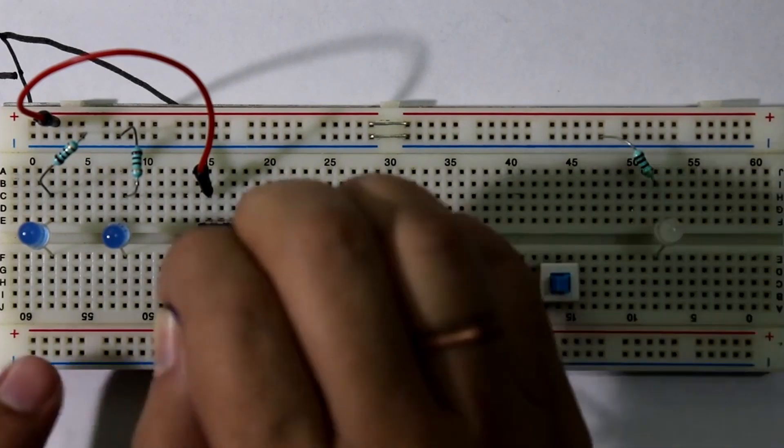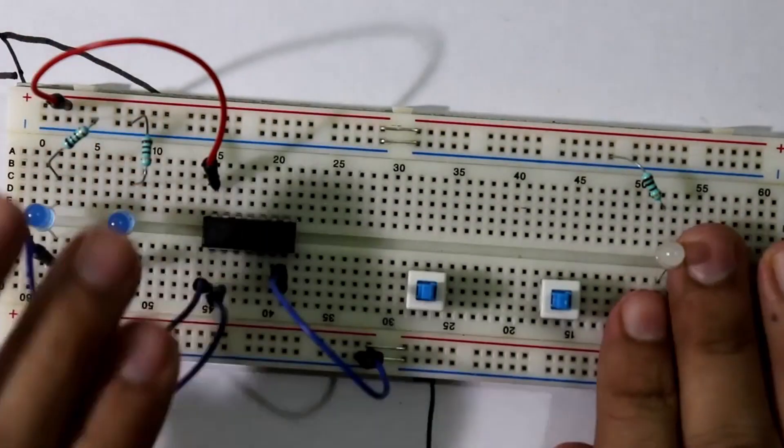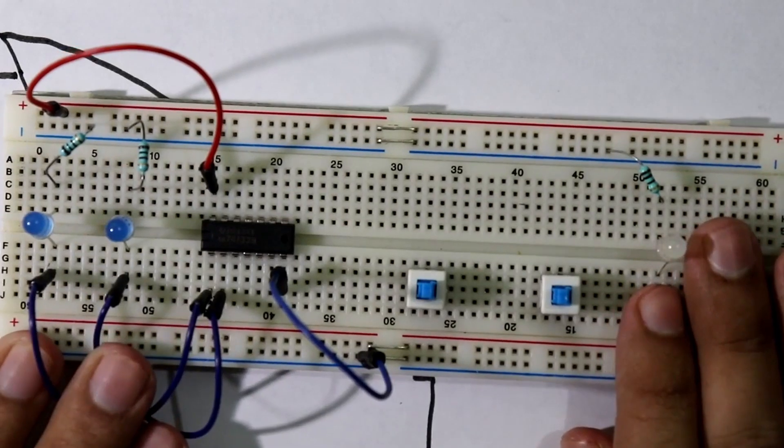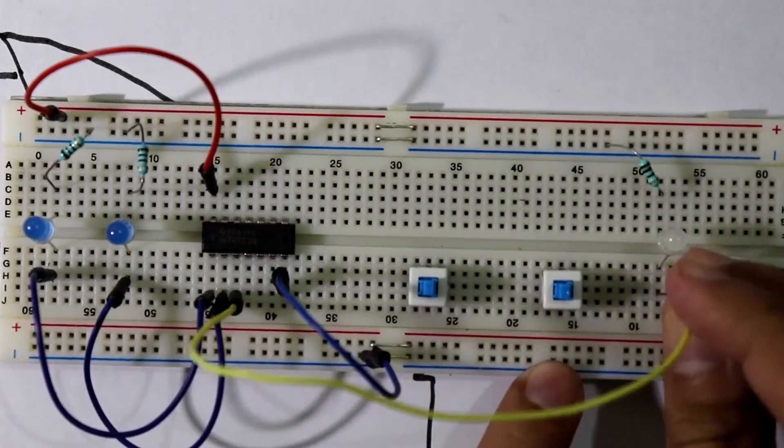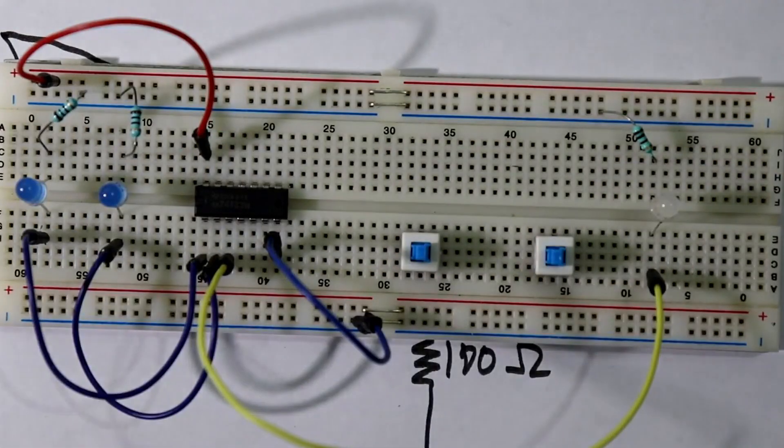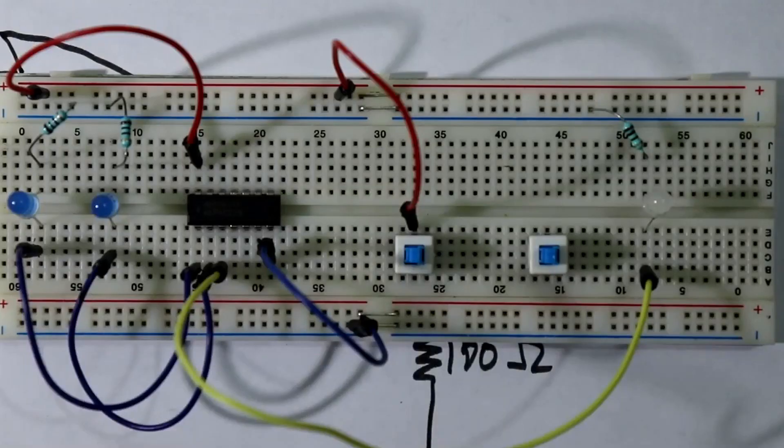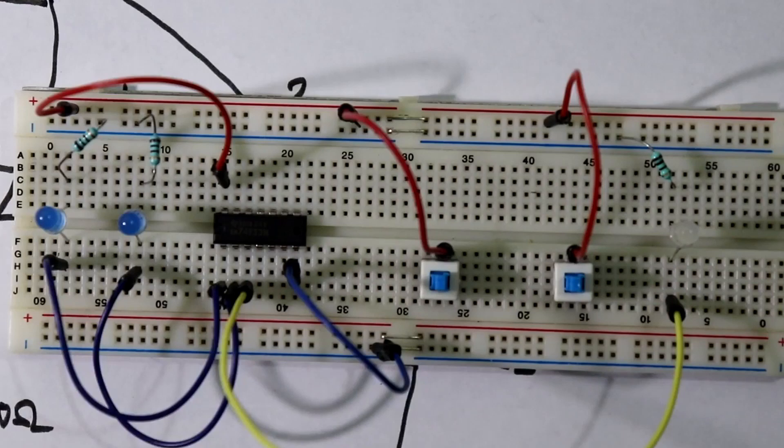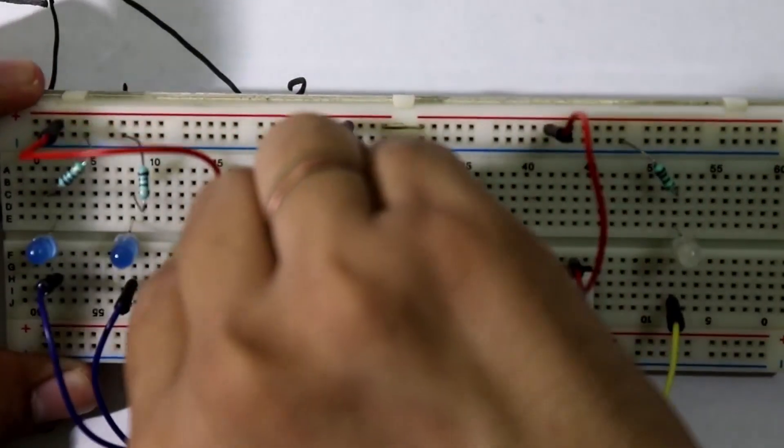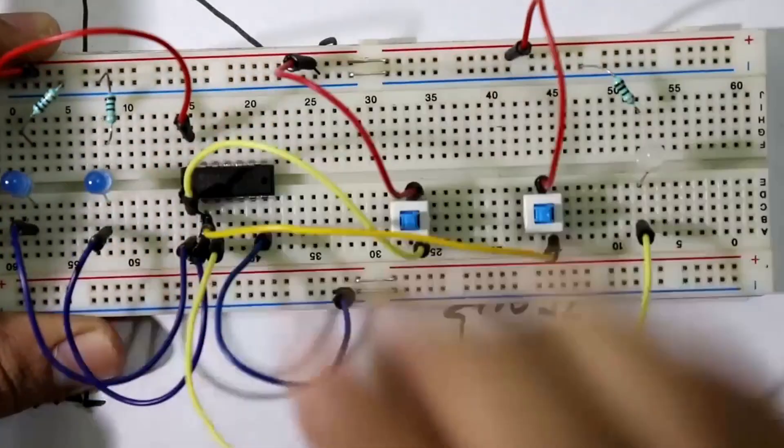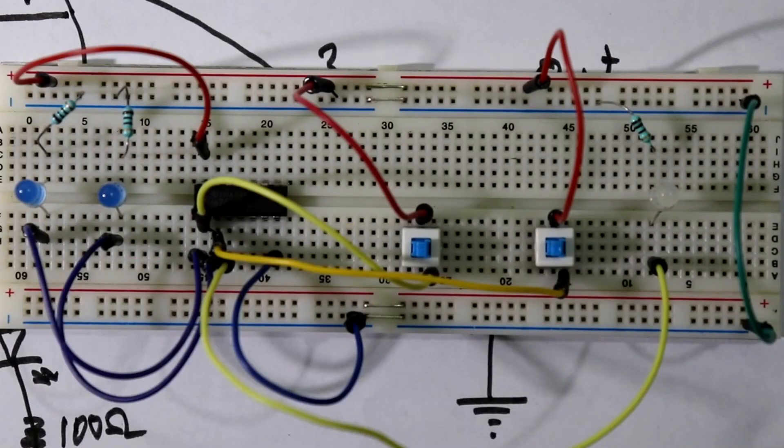Connect all the LEDs with 100 ohms resistor. Now connect input pin with the LEDs. Pin number 1 and pin number 2. Pin number 3 is connected to the output LED. Connect two switches with the plus VCC. Now connect other side of the switch with the input 1, for this switch also pin number 2. Now our circuit is completed.